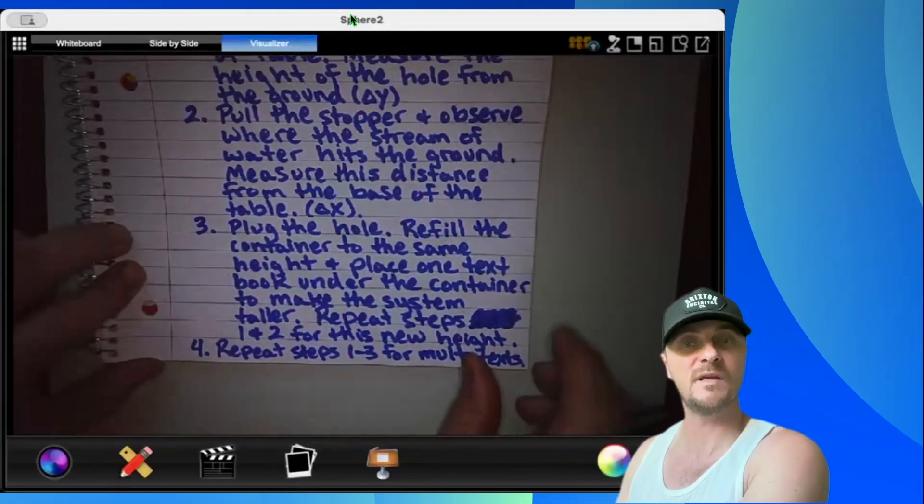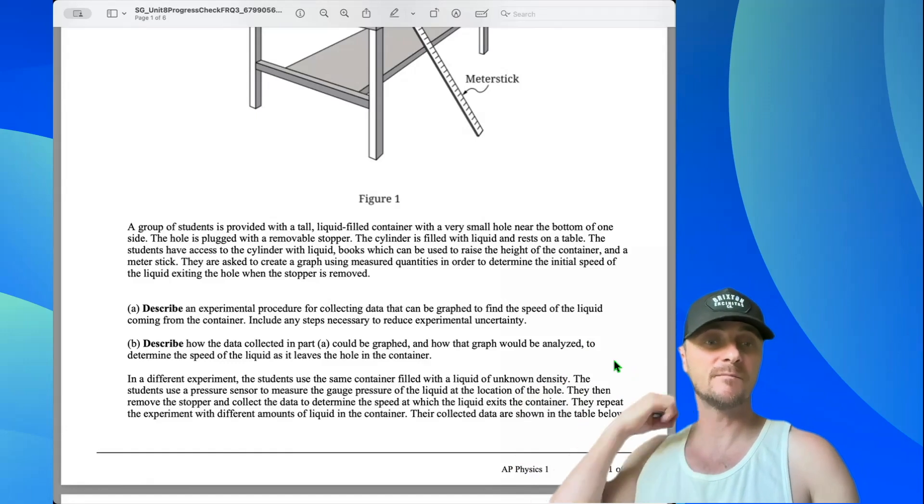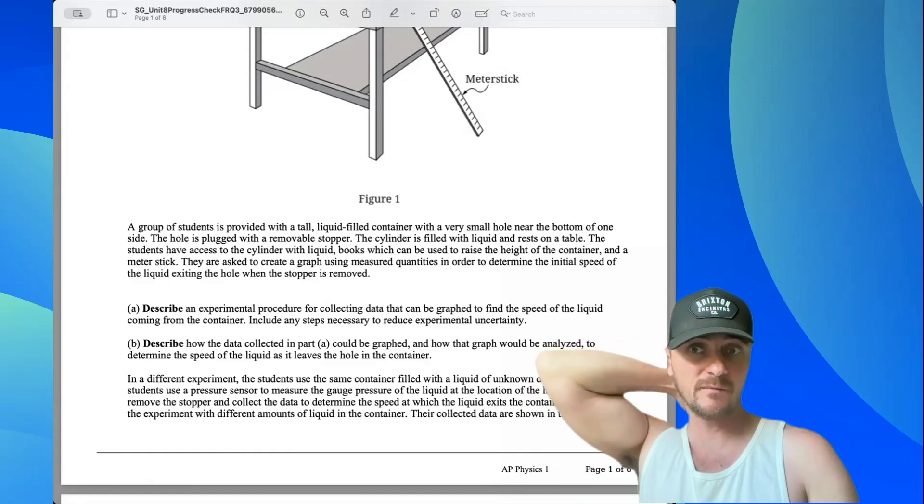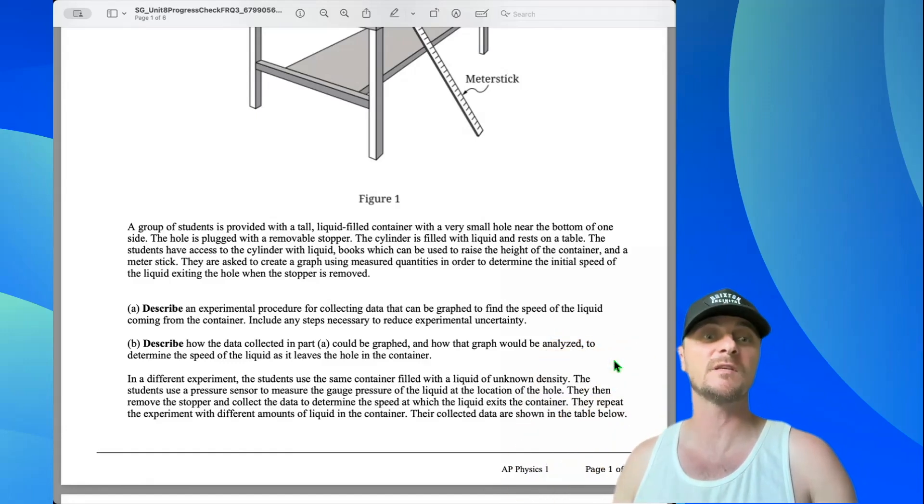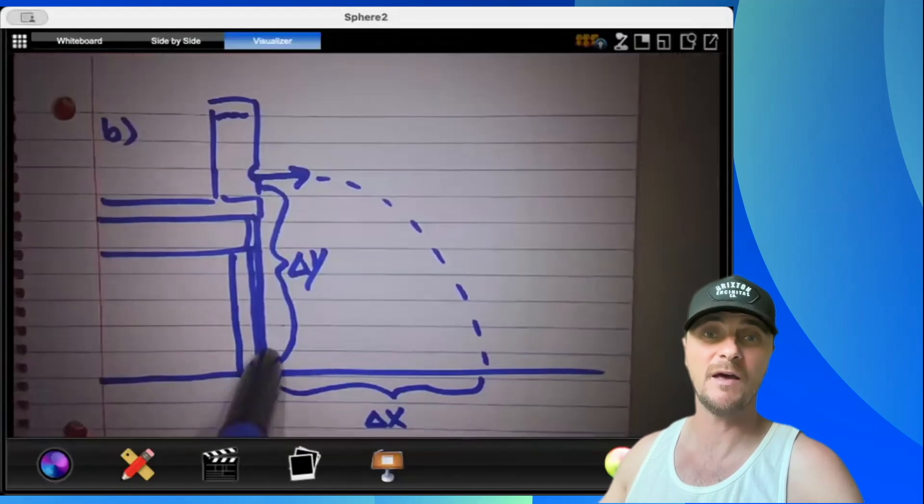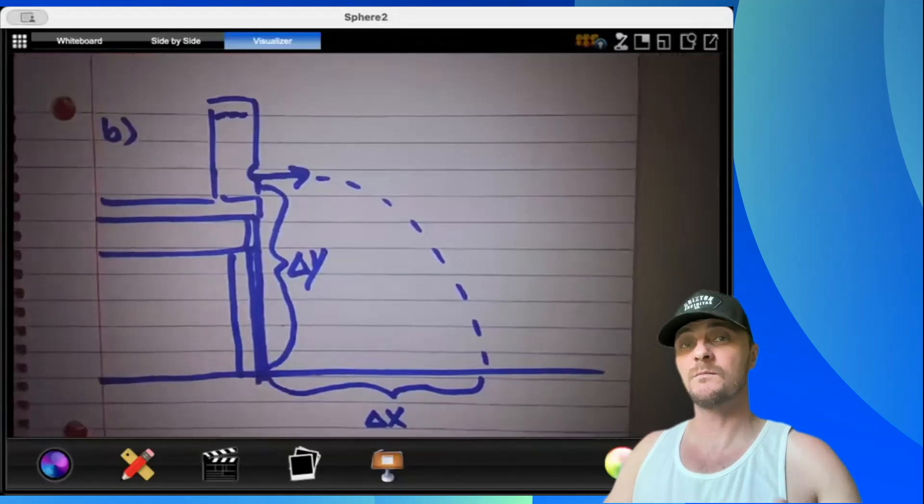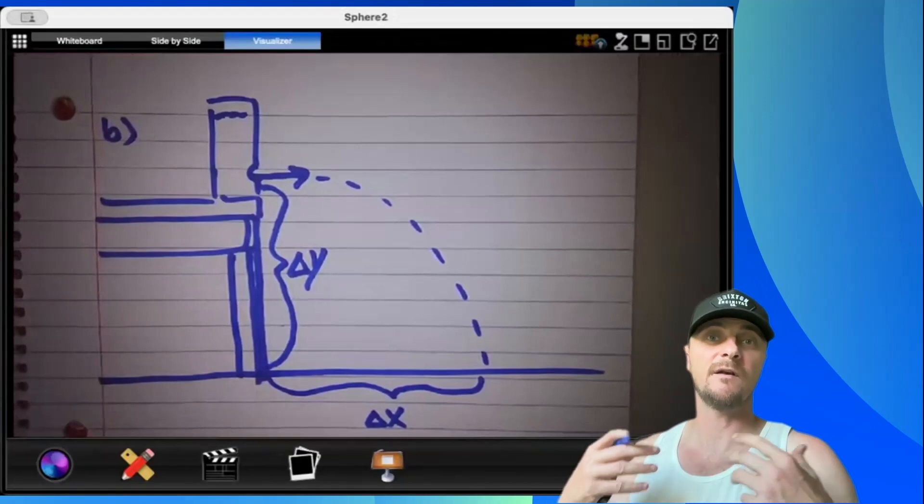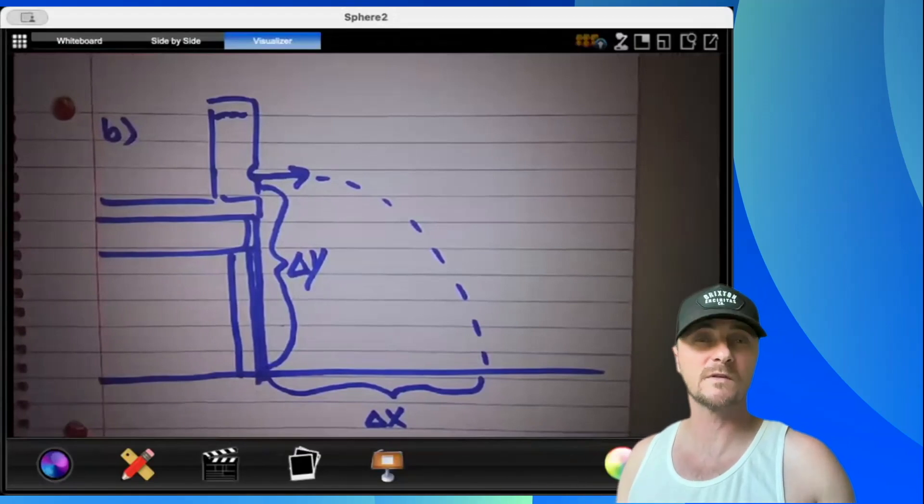Let's head over to part B. Describe how the data collected in part A could be graphed and how that graph would be analyzed to determine the speed of the liquid as it leaves the hole in the container. So before I describe anything verbally, I'm going to make sure to describe what I'm doing mathematically.